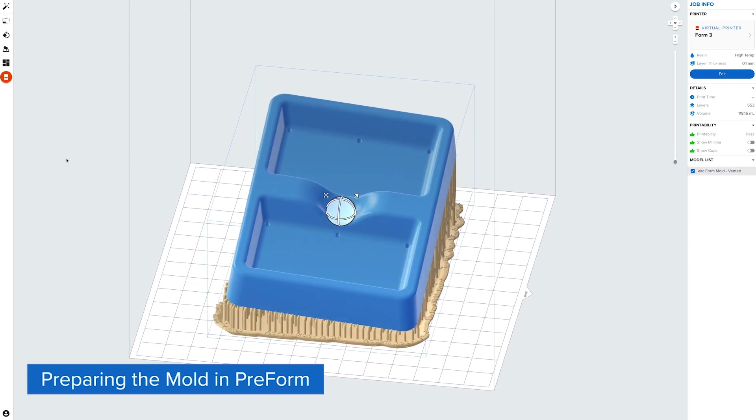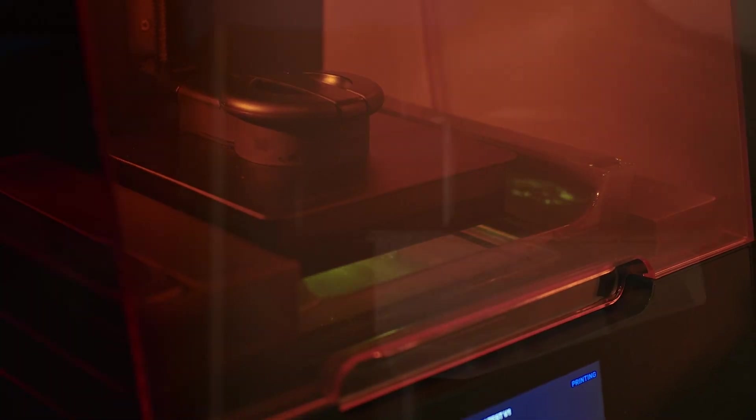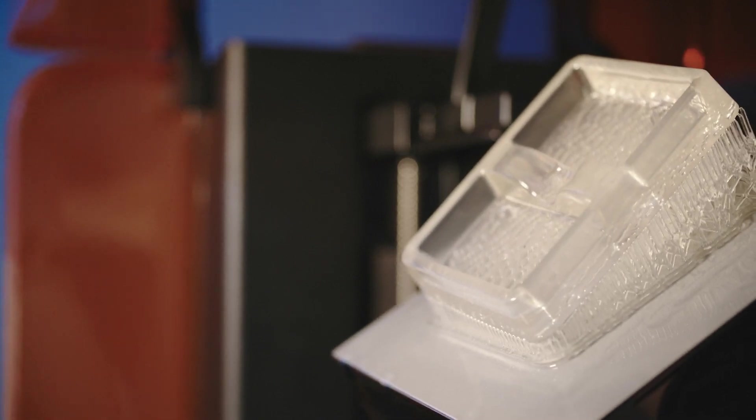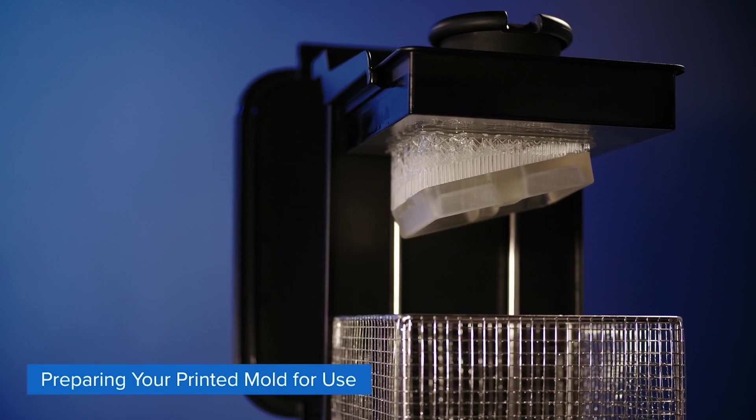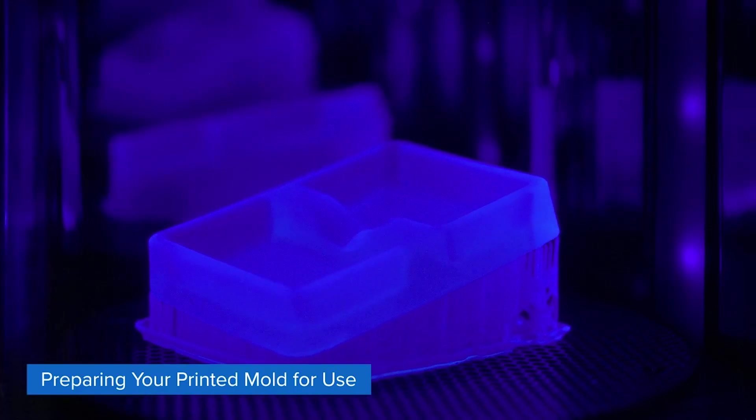Now all that's left to do is to send the print job to the Form 3. A few hours later and our mold has finished printing. After a quick wash and cure process, our mold is ready for vacuum forming.